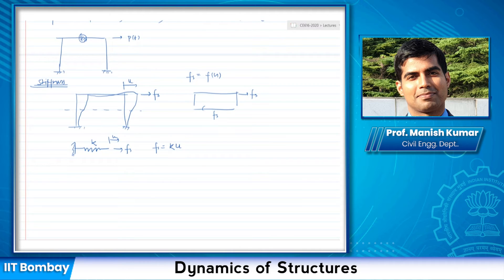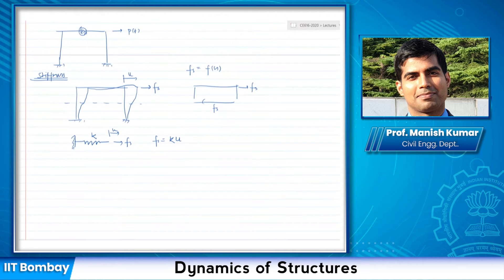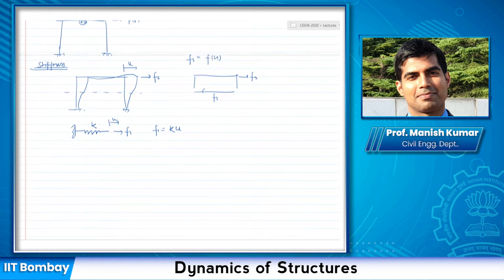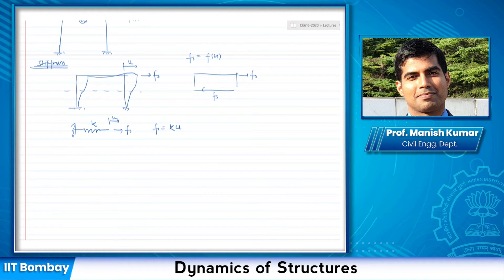Let us start with the simplest representation of a stiffness system. If I have a spring of stiffness K and apply a force Fs, can I say Fs equals the stiffness of the system times the displacement? Now I want to do the same thing for the frame — the question is: how do I find the relationship between Fs and U?